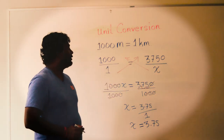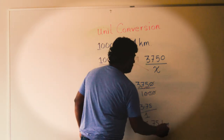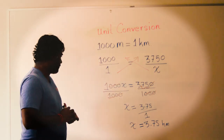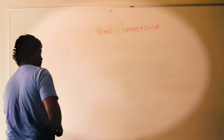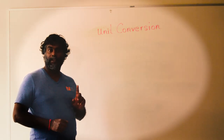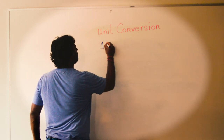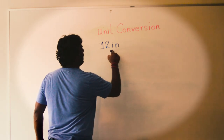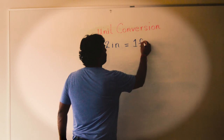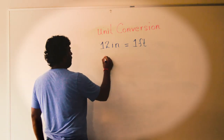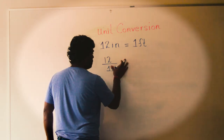Any number divided by 1 is going to be the same number, so X is equal to 3.75. That means if you have 3,750 meters, that's equal to 3.75 kilometers. Now let's go for another example. Everyone, I'm hoping that you know 12 inches in a foot. So I'm going to write: 12 inches equals 1 foot. Every 12 inches, there will be 1 foot.